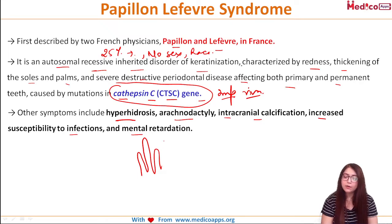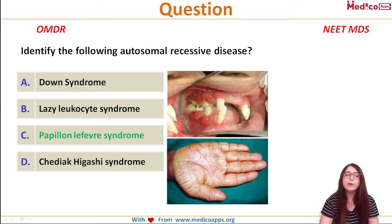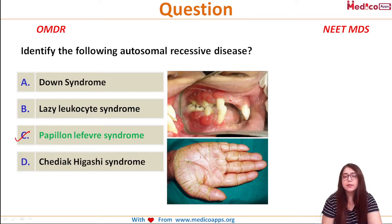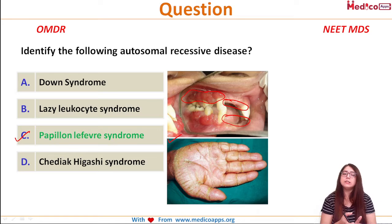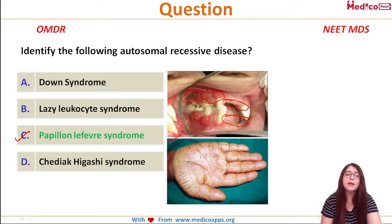Coming back to the question, the answer is Papillon-Lefèvre syndrome. You can see loss of teeth, inflammation of the gingiva, and hyperkeratosis of the palms and soles — all these findings favor the diagnosis of Papillon-Lefèvre syndrome.